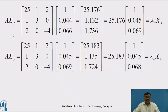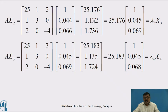Third iteration: A × X2 = [25, 1, 2; 1, 3, 0; 2, 0, -4] × [1; 0.044; 0.066]. Taking the matrix multiplication, we get [25.176; 1.132; 1.736]. Taking 25.176 as common factor and simplifying, we get 25.176 × [1; 0.045; 0.069] = λ₃ × X3, where λ₃ = 25.176 and X3 = [1; 0.045; 0.069].